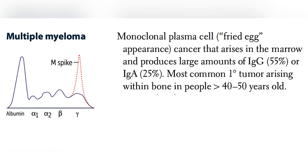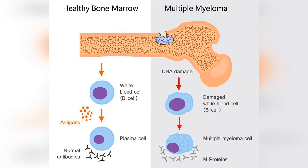The monoclonal Ig is referred to as an M-component that can be detected as an M-spike via serum protein electrophoresis. Additionally, bone marrow core biopsies can sometimes demonstrate the fried egg appearance. The most common monoclonal Ig's include IgG and IgA.